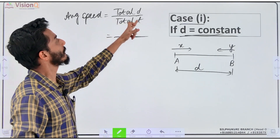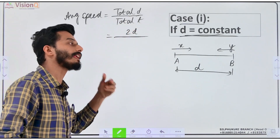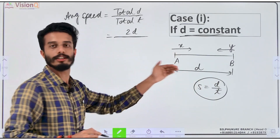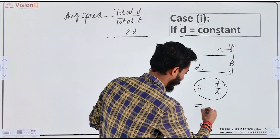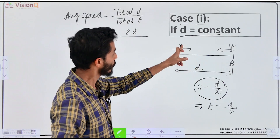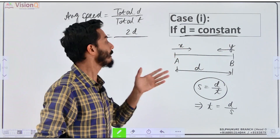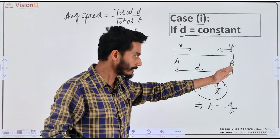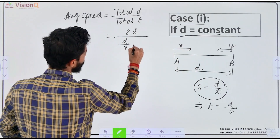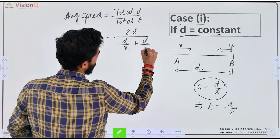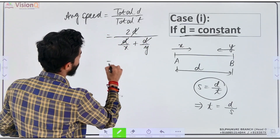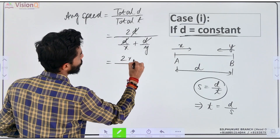What is total time taken? The formula for speed is distance by time, so time = distance divided by speed. Time taken from A to B is D/X, and time from B to A is D/Y. Total time = D/X + D/Y. Taking D common and cancelling, average speed = 2D / (D/X + D/Y) = 2XY / (X + Y).